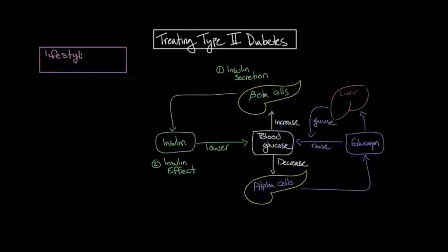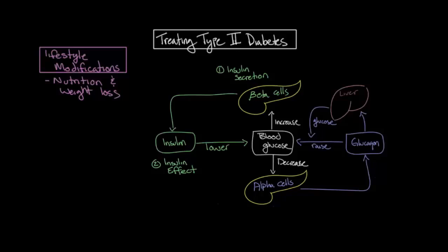We'll begin with lifestyle modifications. The first lifestyle intervention is that of proper nutrition and weight loss. Regardless of one's initial weight, proper nutrition and associated weight loss improves the body's ability to regulate blood glucose levels. Proper nutrition for type 2 diabetes includes a well-balanced, low-calorie, and low-carbohydrate diet. This can be a very difficult change for many people with type 2 diabetes, as it takes a great deal of dedication and self-control. However, it is extremely important because a proper diet and weight loss have been shown to both increase insulin secretion and decrease insulin resistance.